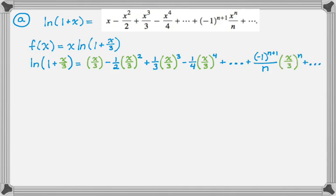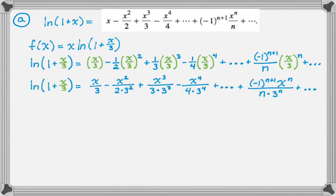I simplified this a little bit without expanding the threes to a power. So it looks like x over three minus x squared over two times three squared, plus x cubed over three times three cubed, and so on. The nth term ends up looking like negative one to the n plus one, times x to the n, over n times three to the n.